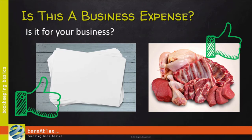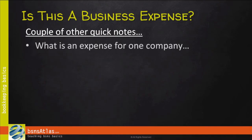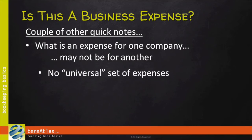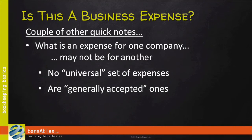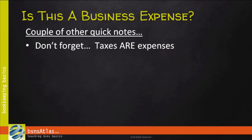The trick is you've got to think about your business and determine if the money you're spending is actually there to help you earn income. Employee appreciation, for example, can help earn income. Also keep in mind: what's an expense for one company may not be for another. As I mentioned during the chart of accounts discussion, there isn't a universal set of expenses — there are some generally accepted ones, but you have to figure out what expenses you need for your business.